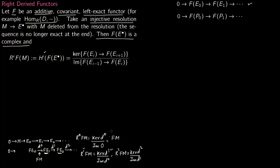So that is pretty much it. From a single functor F you were able to construct a large number of derived functors — one for every i. For i equals 0 you just have F(M). For i = 1, 2, 3, 4 and so on you continuously have these derived functors.